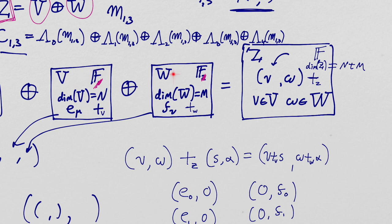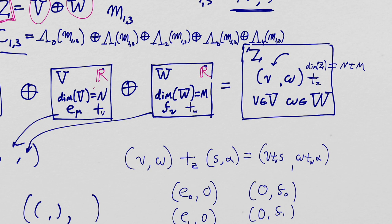In the bottom-up approach as I wrote it, I said V has field F1 and W has field F2, glossing over the fact that Z has a field too. The two vector spaces you direct sum together need to have the same field. For all of our work, the only field that matters is the real numbers. This process of a direct sum is truly more mathematically general, but for everything we do in the geometric algebra, it's real numbers.